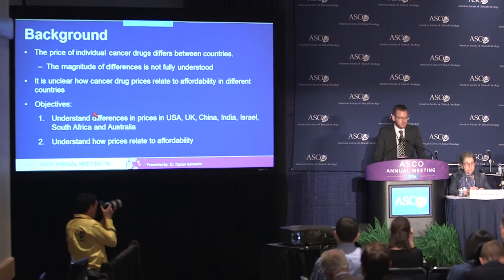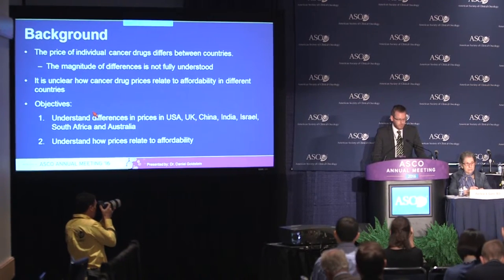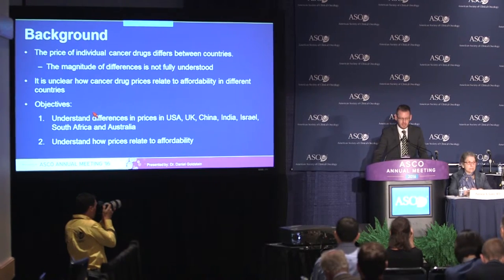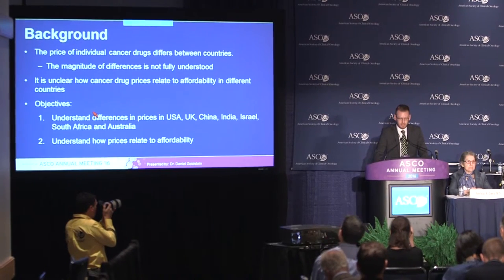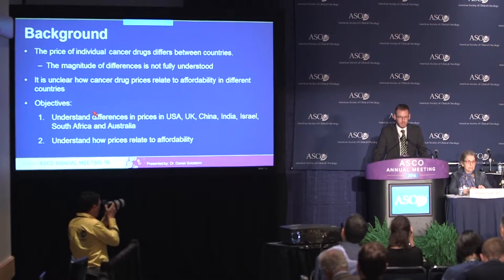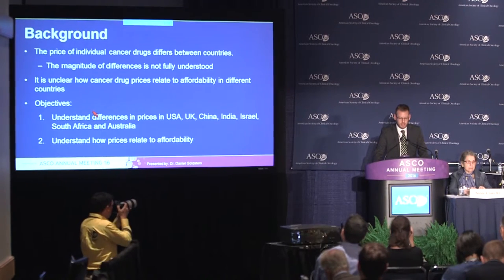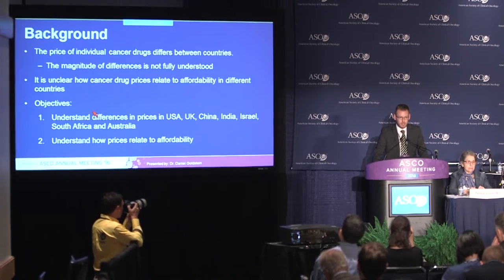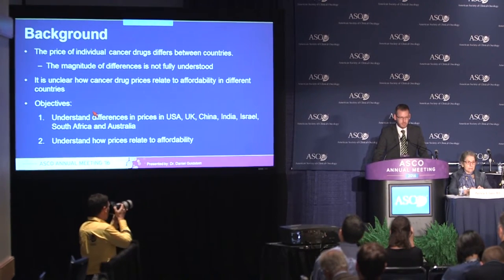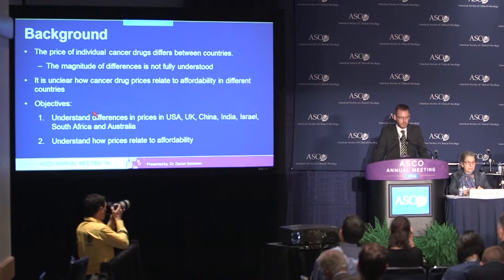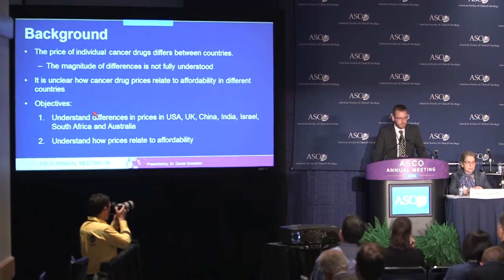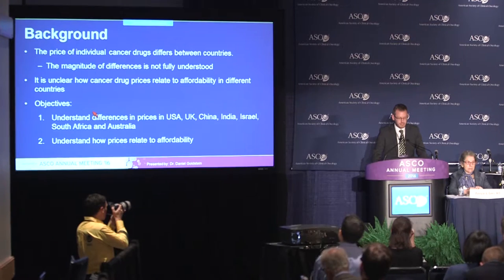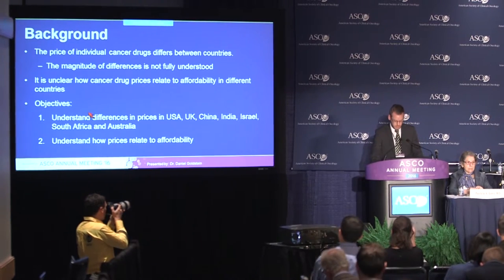The objectives of this study were to understand the difference in cancer drug prices in multiple countries: the USA, the UK, China, India, Israel, South Africa, and Australia. The secondary objective was to understand how these drug prices relate to affordability.